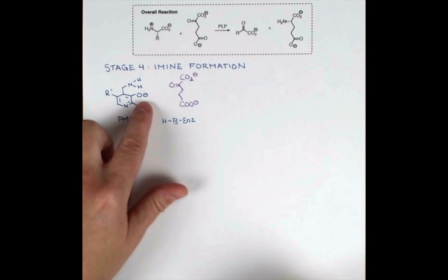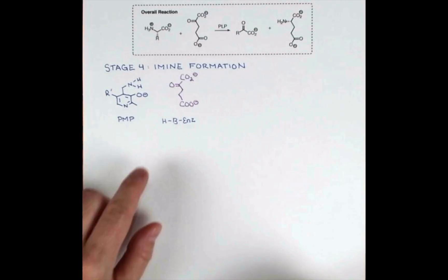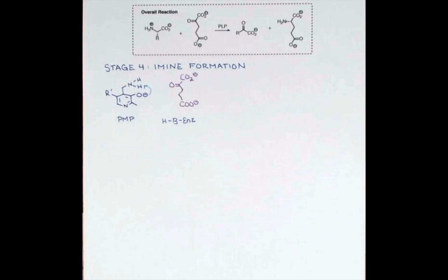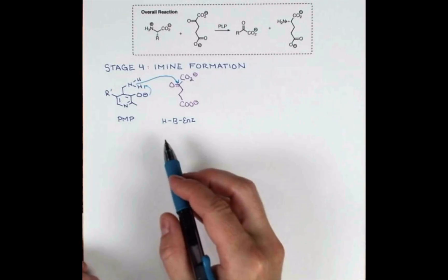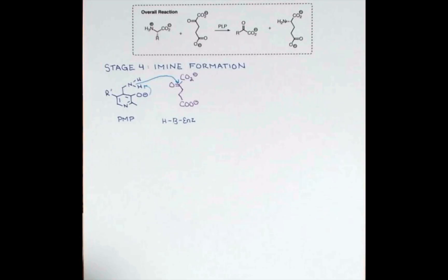So PMP was deprotonated in the final step. This is in great position to grab this proton and facilitate the attack. So we're deprotonating here, these electrons can come and attack this carbonyl, and we'll protonate using our enzyme residue.